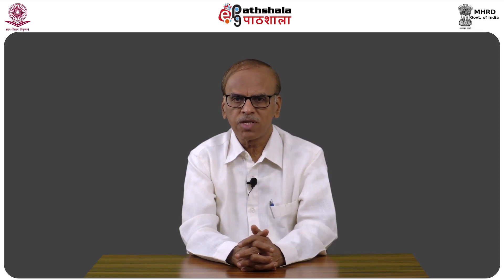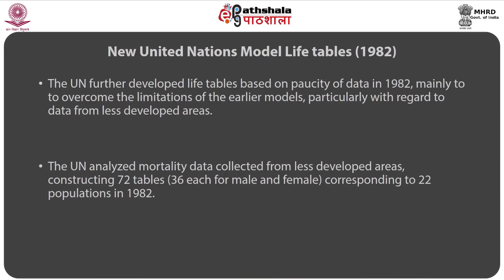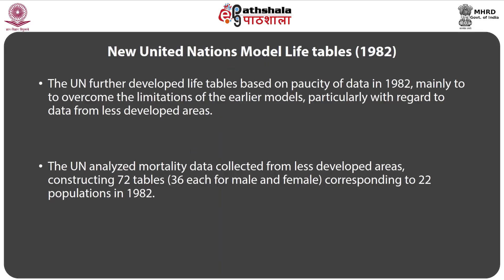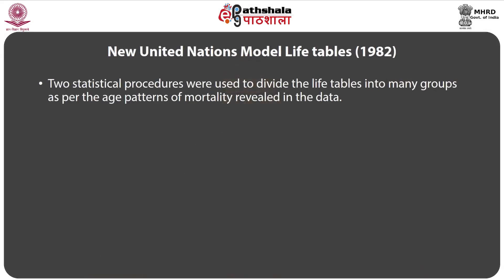The first set of model life tables by the United Nations was developed by the Population Division of the United Nations Secretariat in 1982. The United Nations analyzed mortality data collected from less developed areas, constructing 72 tables — 32 each for male and female — corresponding to 22 populations. The effort was in part to overcome the limitations of the earlier models, particularly regarding data from less developed areas. Two statistical procedures were used to divide the life tables into groups based on the age pattern of mortality.